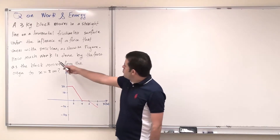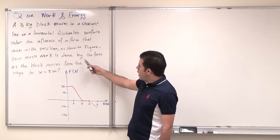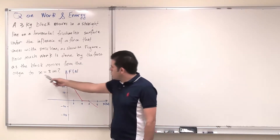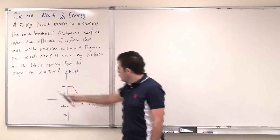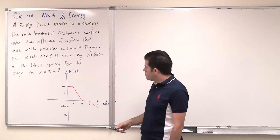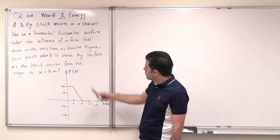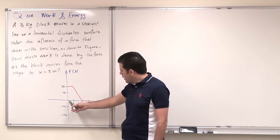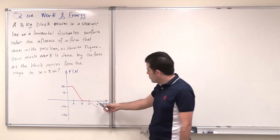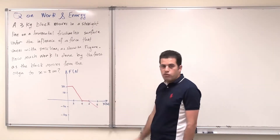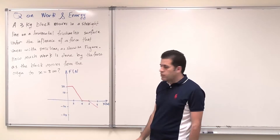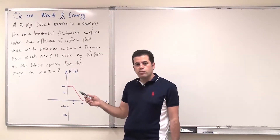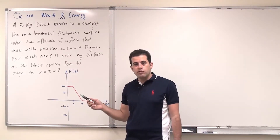How much work is done by the force as the block moves from x equals zero, the origin, to x equals eight meters? I need to find the work done by this force as the block is moved from the origin to eight meters. This is an example on work done by a varying force.